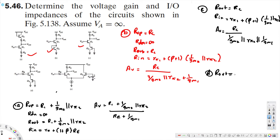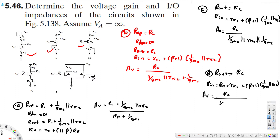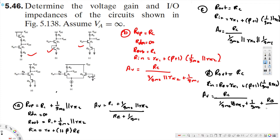For part D, the output impedance is Rc, and the input impedance is Rb plus R51 plus (beta + 1) times (1/gm2 parallel R52). The voltage gain equals Rc divided by [(1/gm2 parallel R52) plus (1/gm2) plus (Rb divided by (beta + 1))].